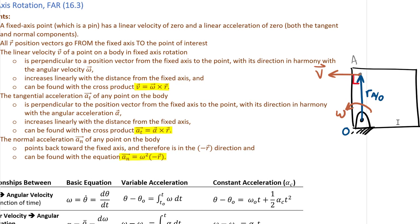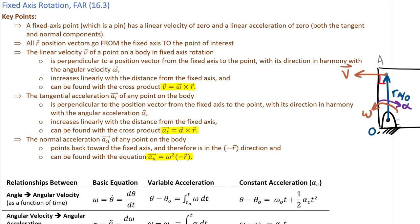The tangential acceleration is based upon alpha. If alpha is going opposite to omega, the body is slowing down — that would be a negative alpha from the right-hand rule. Crossing that negative alpha into the position vector gives us the tangential acceleration A_t. The normal acceleration is in the negative R direction: we square the omega (as a scalar, so sign doesn't matter), then multiply by the negative components of the R vector. No cross product — just a scalar times the vector components.